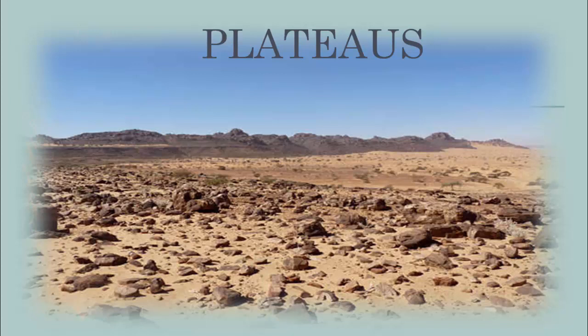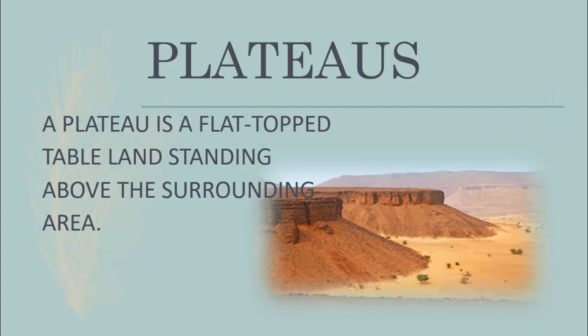Now let us learn about plateaus. Plateaus are also highlands, but they have more flat lands with some hills in between them. In the plateaus, the landscape is uneven with ups and downs, but not as steep as in the mountains. A plateau is a flat-top tableland standing above the surrounding area.